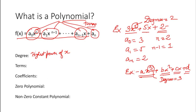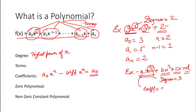Now let us understand what is the coefficient. The coefficient is the constant part of the variable x. Suppose we have one term a₀xⁿ — the coefficient of xⁿ equals a₀. The constant part of the variable is known as the coefficient. For example, the coefficient of 3x³ is 3, the coefficient of 5x is 5, and the coefficient of ax³ is a. The constant term involved with the variable x is known as the coefficient.